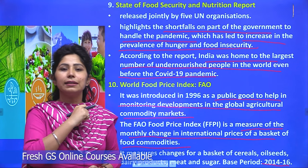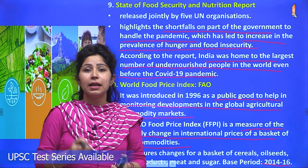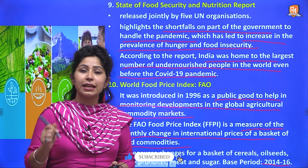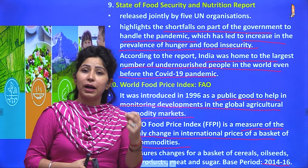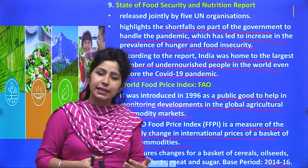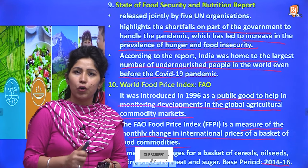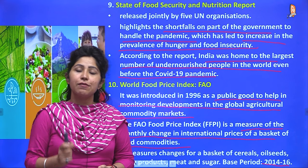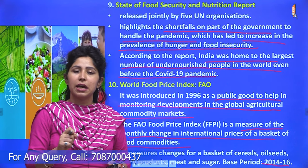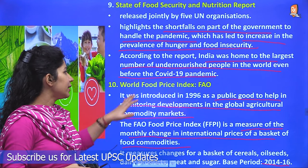The State of Food Security and Nutrition Report is released jointly by five United Nations organizations including FAO. It highlights the shortfalls on the part of governments in ensuring food security, particularly during crises like the COVID-19 pandemic. This report highlighted that India was already home to the largest number of undernourished people in the world even before COVID-19 — putting India in a very concerning light regarding food security.